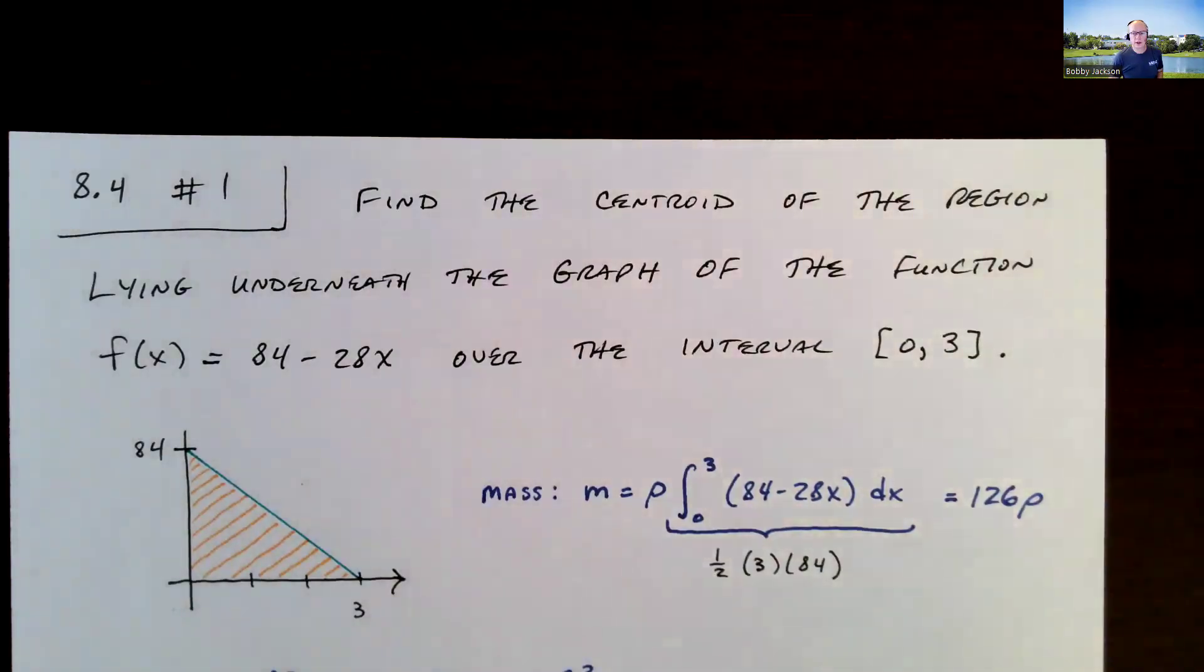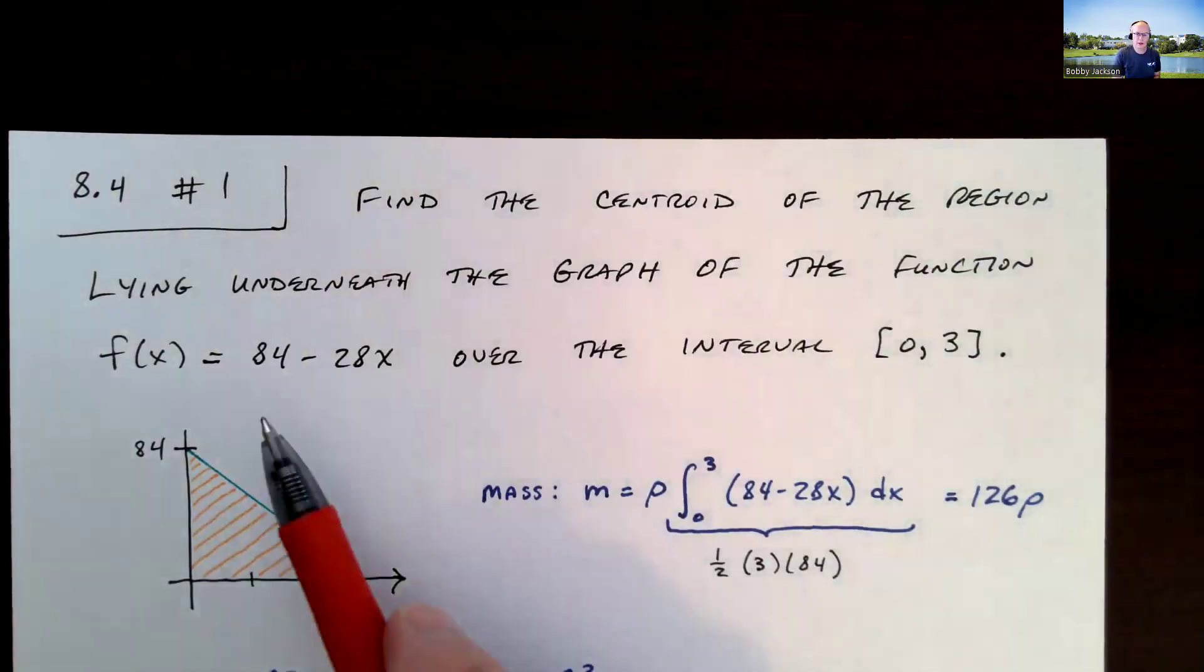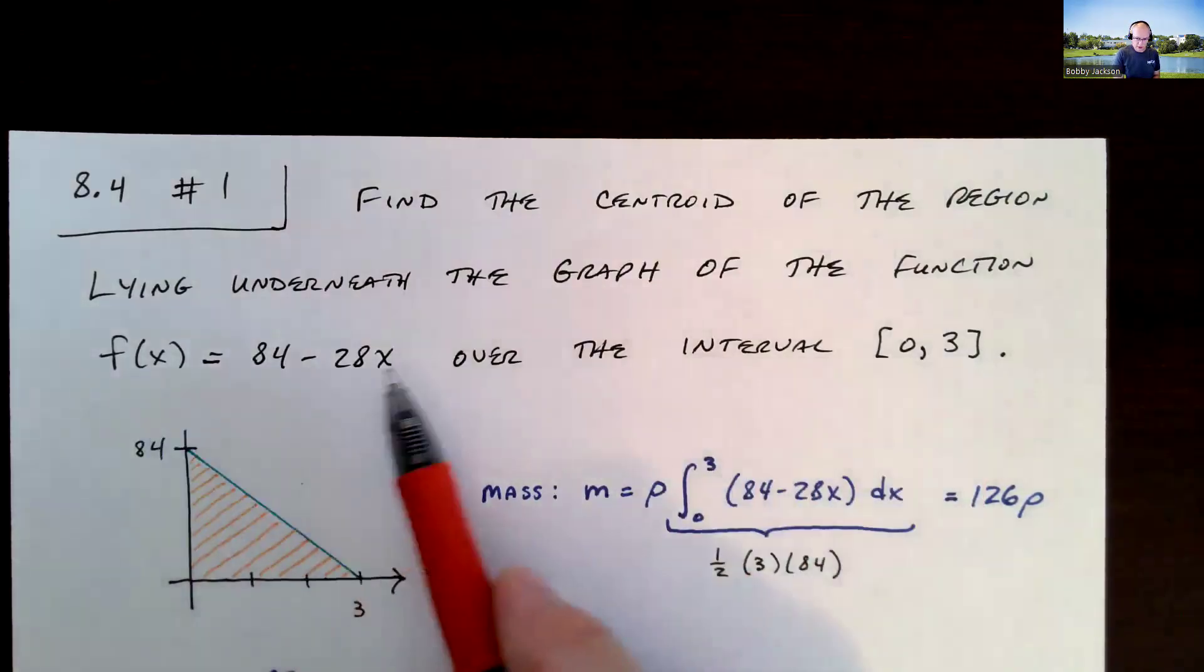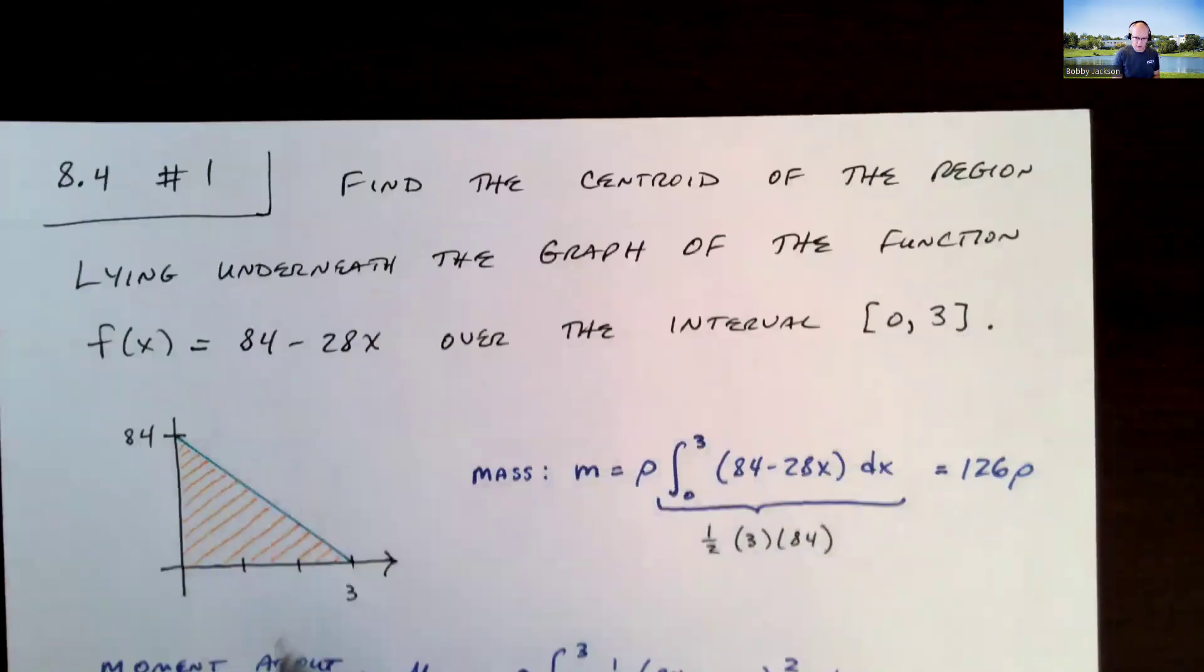Hey everyone, let's take a look at number one in section 8.4. We're going to find the centroid of the region lying underneath the graph of the function f(x) equals 84 minus 28x over this interval. It's under this function, but above the x-axis.